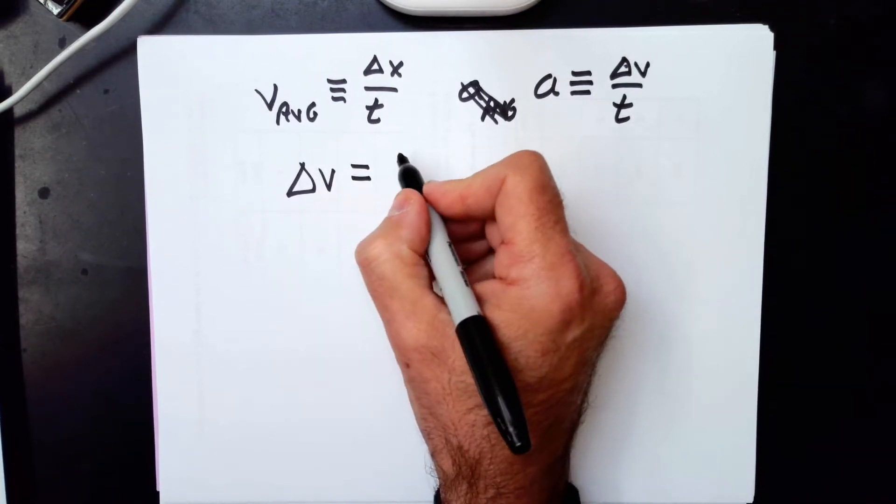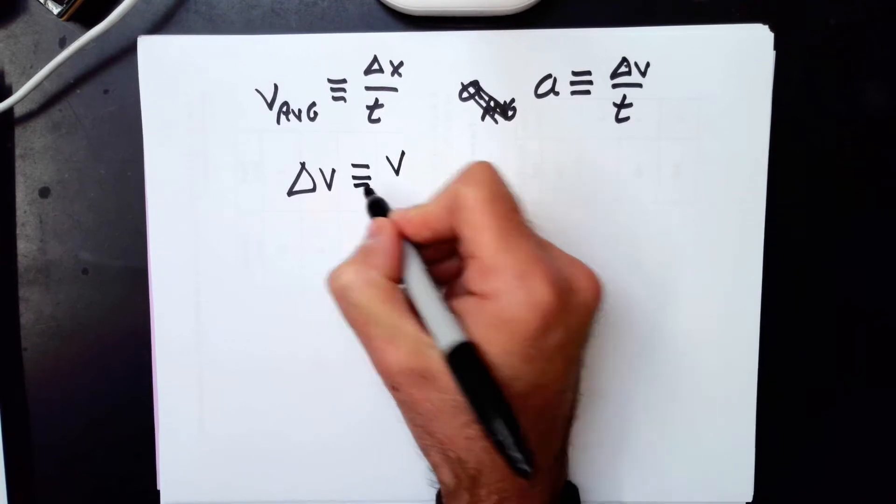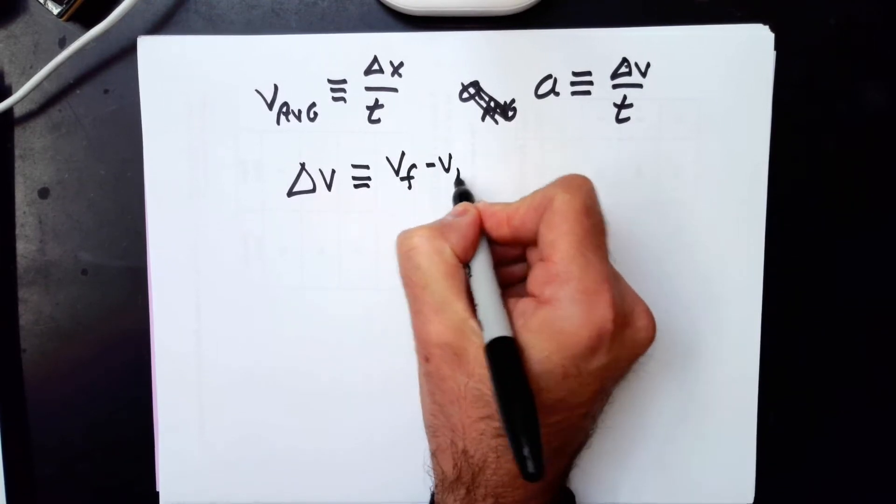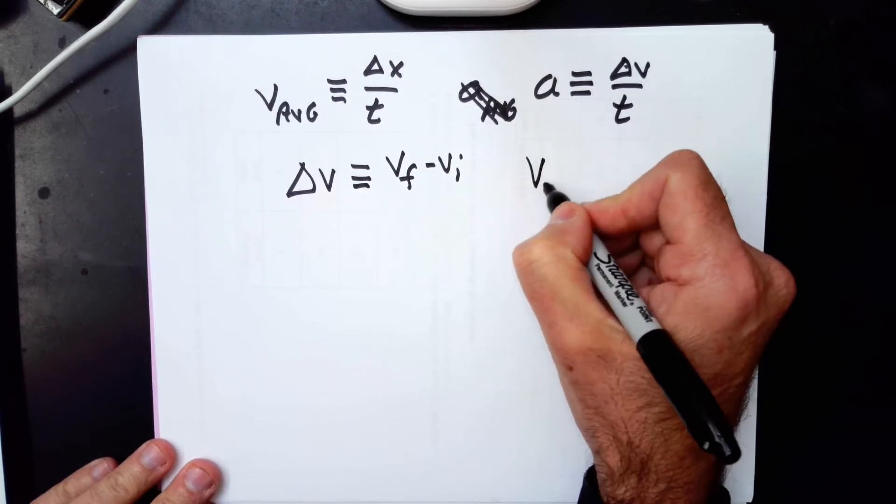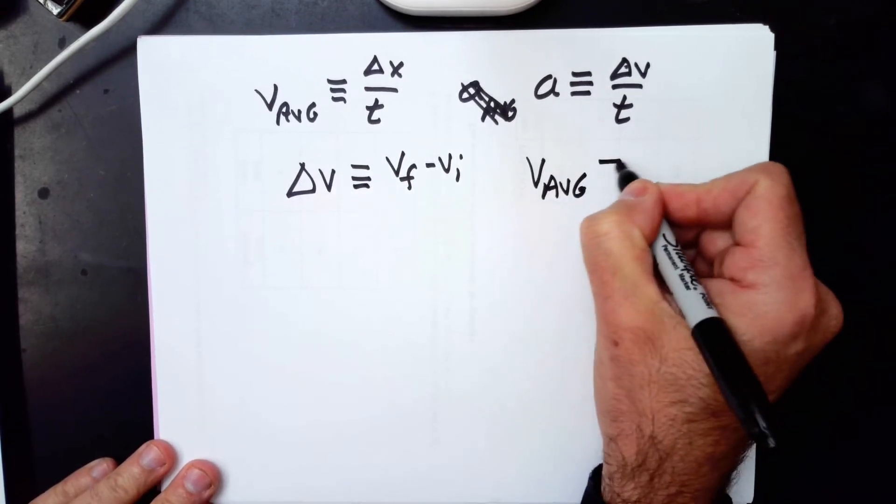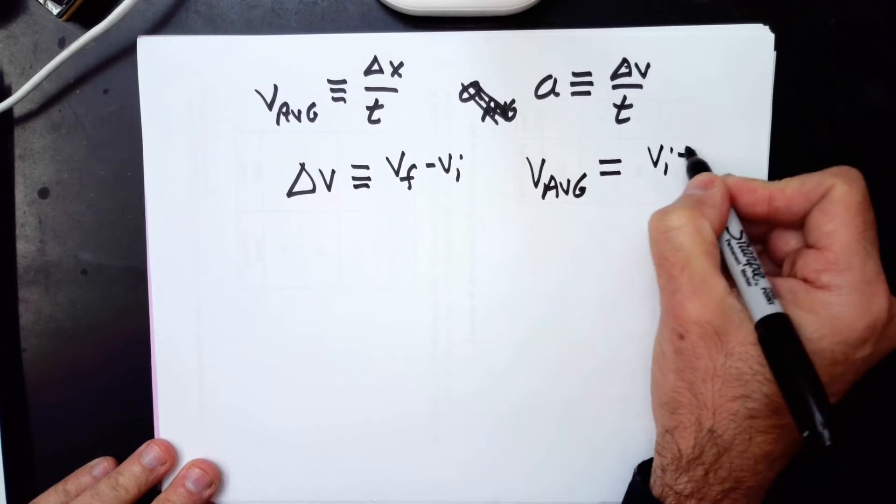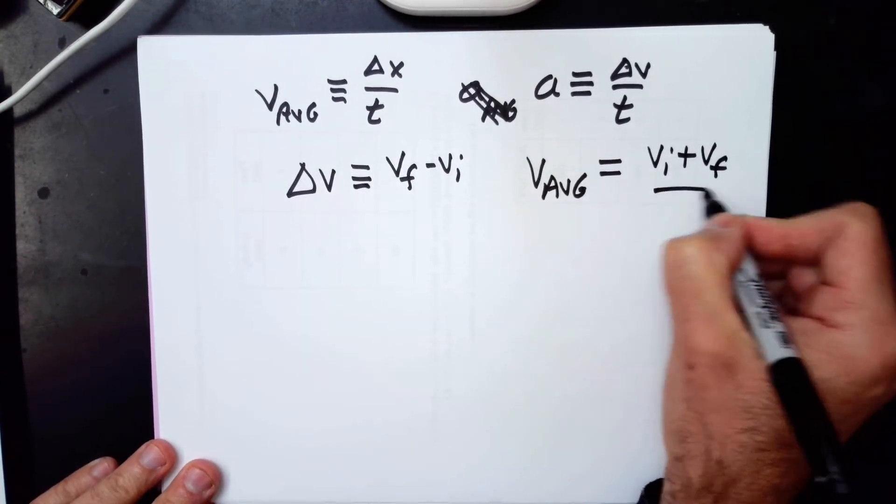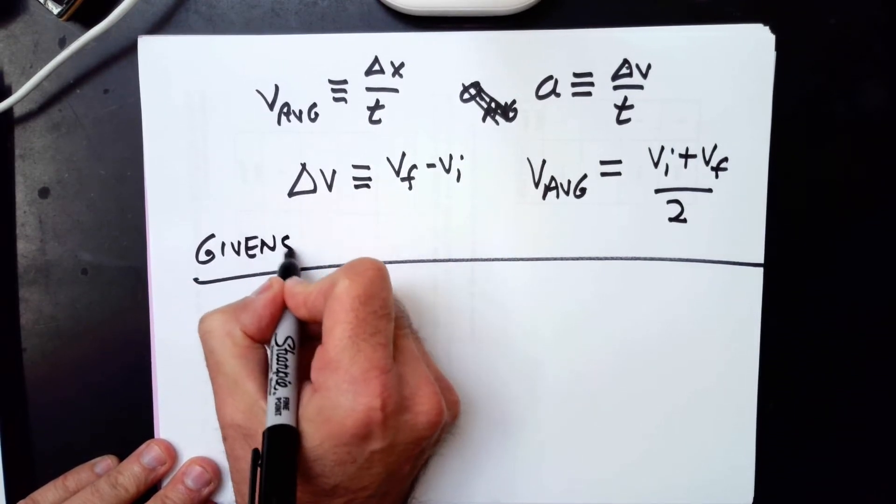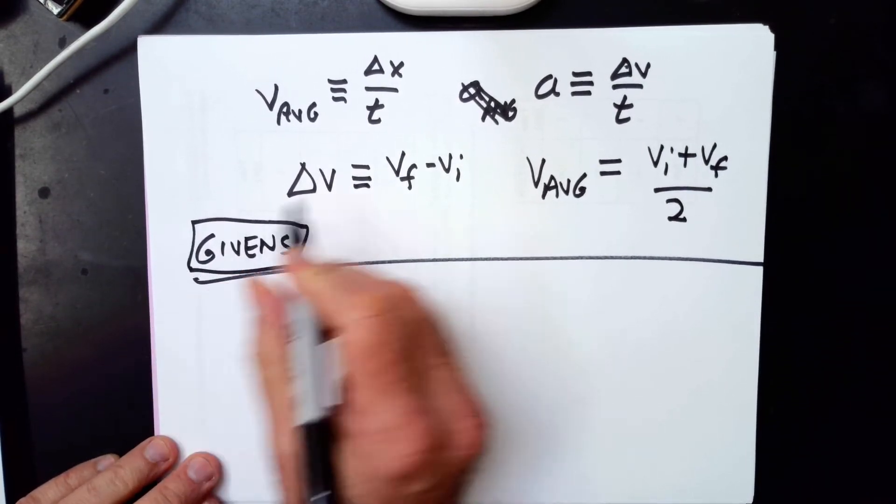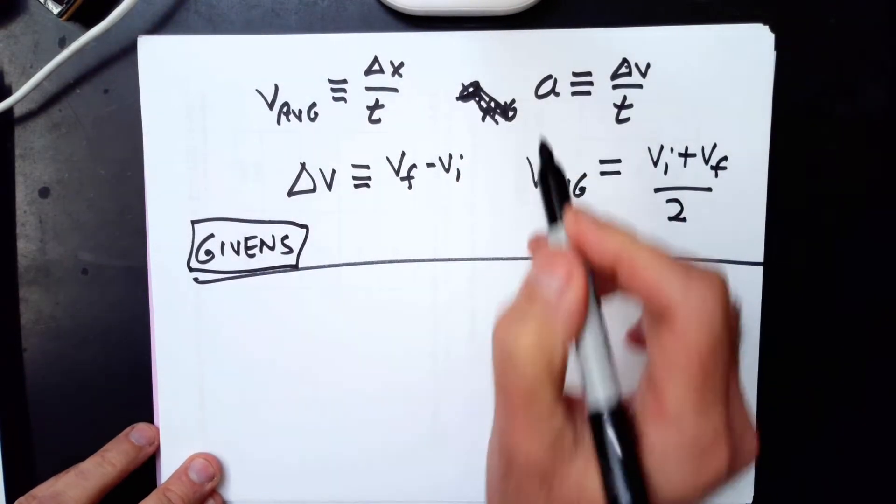And that brings us to Δv. Δv is defined as vf minus vi. And then finally, there was a theorem that was proved that if the acceleration is constant, there's another way to write v average, exactly the way you would think an average would be, vi plus vf over 2. These are your givens, meaning you're allowed to assume that they are true. So these are starting points. You can start with these.